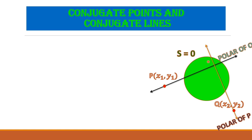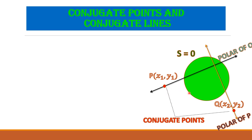Here we observe that these points are external points. Now, we take not only external but also internal points, or points lying on the circle. We observe that the point Q lies on the polar of P, and the point P lies on the polar of Q. This type of condition exists for any two points with respect to the circle; then those points are called conjugate points with respect to the circle s=0.